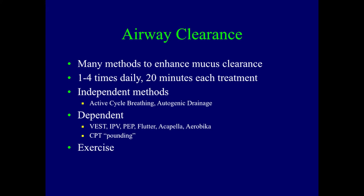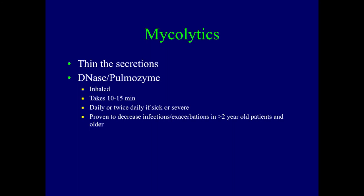Mucolytics thin secretions. Pulmozyme (DNase) is inhaled, takes 10 to 15 minutes, can be taken daily or twice daily when severely ill, and it's proven to decrease infection exacerbation rates in people aged 2 and up. For antibiotics to attack Pseudomonas, we have aminoglycosides used for many years. Gentamicin was used initially along with streptomycin, but streptomycin is too dangerous and causes too many kidney problems.